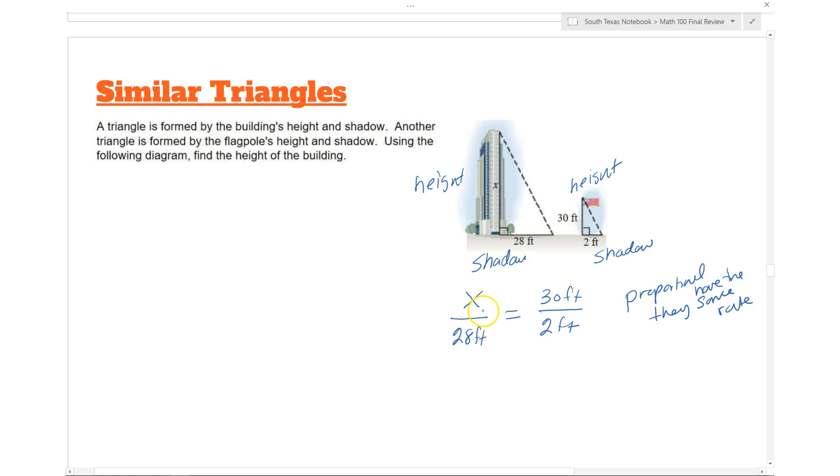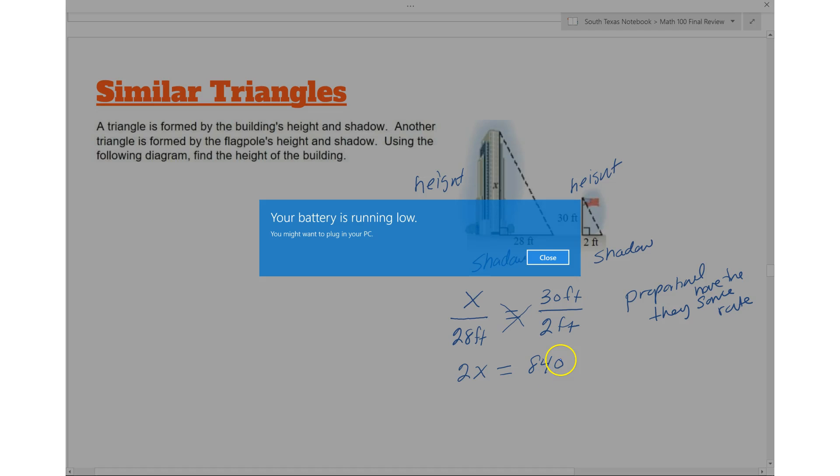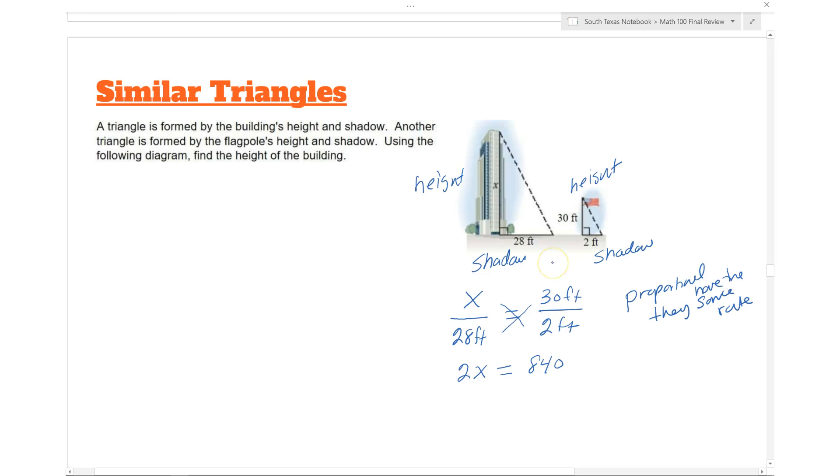In order to solve for X, I have to cross multiply. We have 2 times X which is equal to 30 times 28, which gives you 840. The next step is to divide by 2, so X is equal to 420.